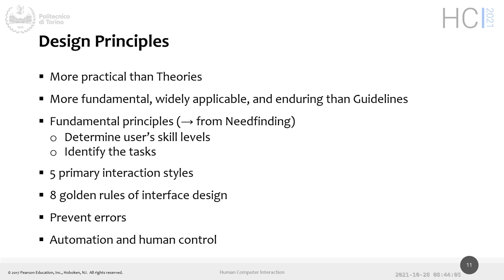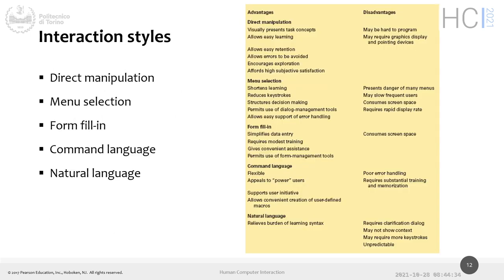These principles depend on the interaction styles the user adopts. We want to customize behavior according to the type of interaction. Today we'll see these eight golden rules of interaction design. There are basically five big approaches to interaction: direct manipulation, menu-driven, form filling, command language, and natural language.